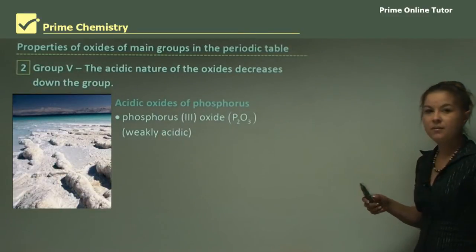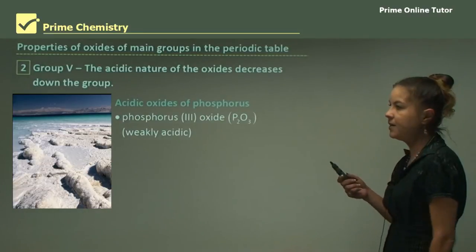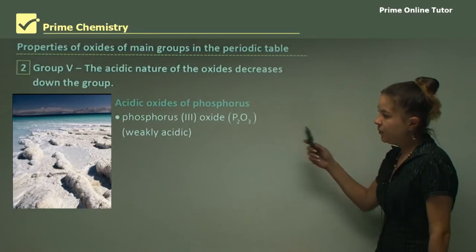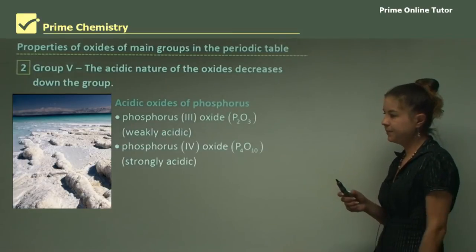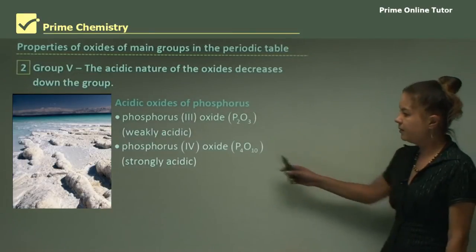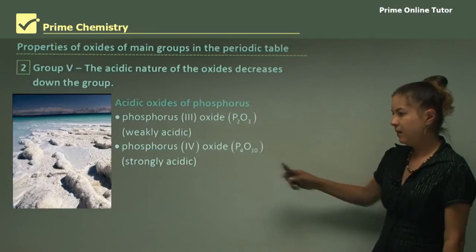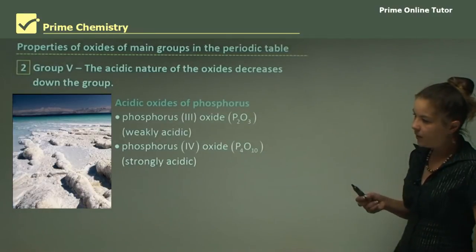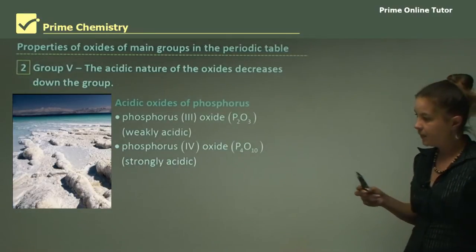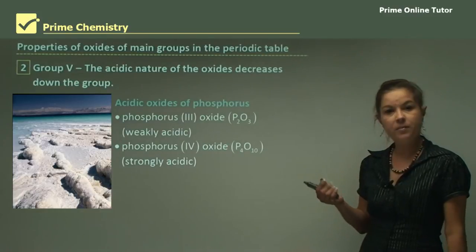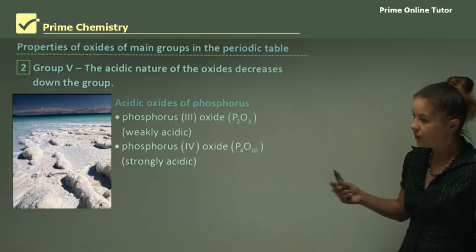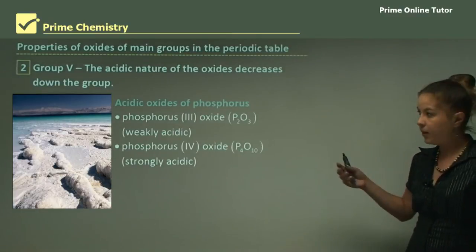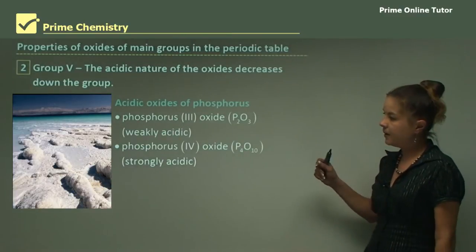Now looking at phosphorus, phosphorus has acidic oxides. Phosphorus(III) oxide P4O6 is weakly acidic. Phosphorus(V) oxide P4O10 is strongly acidic. The picture there is of the Dead Sea showing salts of various metals and non-metals, one of which is phosphorus. When water's evaporated, a lot of salt is deposited in the Dead Sea.